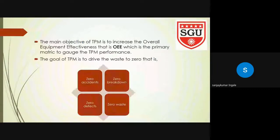The main objective of TPM is to increase the Overall Equipment Effectiveness, that is OEE, which is the primary metric to gauge TPM performance. The goal of TPM is to drive waste to zero — that is zero accidents, zero breakdowns, zero defects, and zero waste.